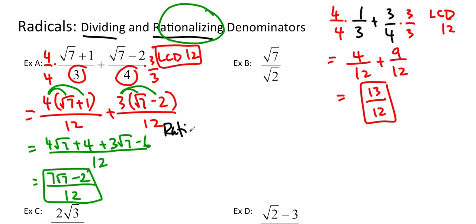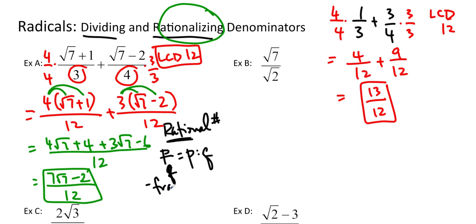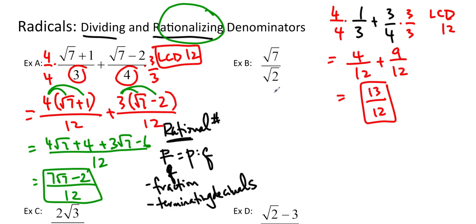A rational number — basically this is derived from ratio — so anything that you can define as a fraction or as a ratio, like p over q for example, is a ratio. So anything that can be expressed as a fraction, like 3 over 1, or a terminating decimal — those are rational things. And root 2 is not one of those rational things. So we want to get rid of this root 2 and make it a rational number. In order to do that, we're going to multiply by the radicand. The radicand is the 2, the root 2. So we're going to do root 2 over root 2.